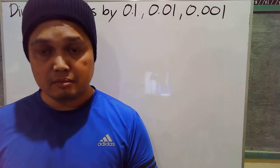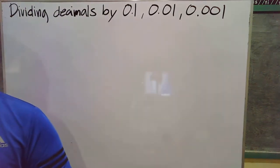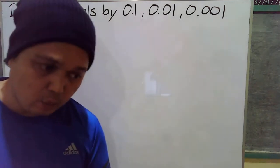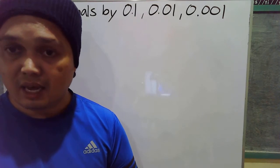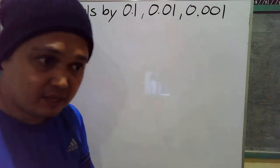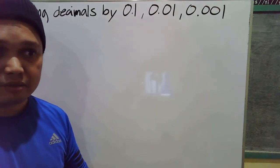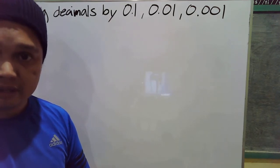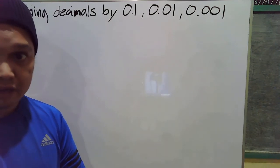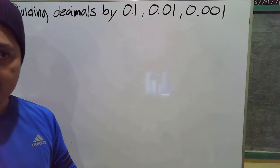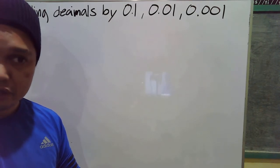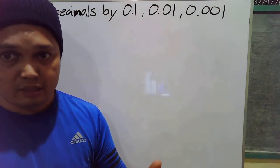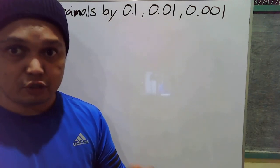Welcome back to your next lesson. This time we're going to divide decimals by 0.1, 0.01, and 0.001. Just like in our previous lesson, we're going to copy the dividend and move the decimal point to the right — depending on how many digits are after the decimal point in our divisor. In our previous lesson, dividing by 10 and 100, we moved the decimal point to the left, but this time we're going to move it to the right.